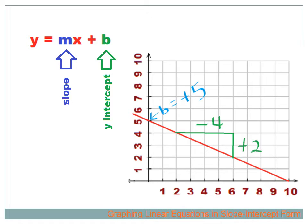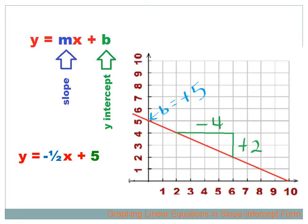Now you know what slope means — rise over run. This line rises positive 2 and runs 4 in the negative direction, so the slope is plus 2 over minus 4, or minus 2 over 4, or minus 1 over 2. We know the slope is minus one-half, and we know the intercept is positive 5. So the equation looks like this: y equals minus one-half times x, plus the y-intercept, 5.